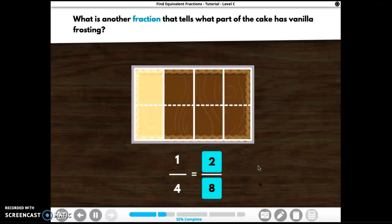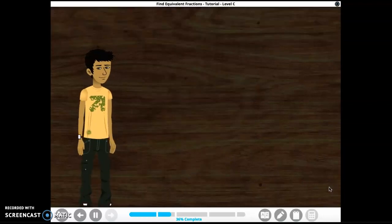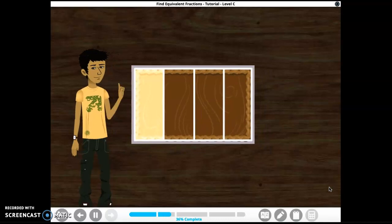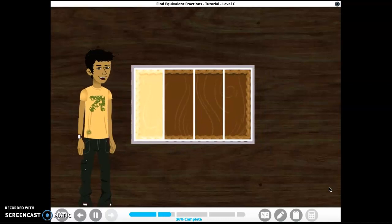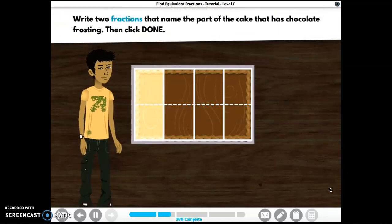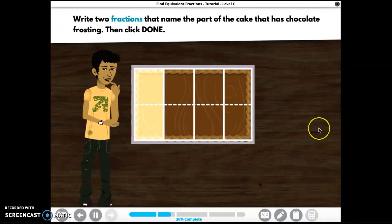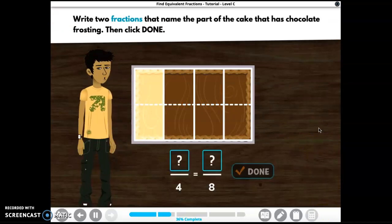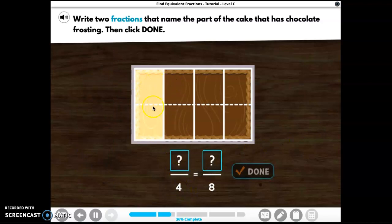Now let's look at the chocolate part of our killer chanilla cake. Remember we started out with four equal parts. Now we've cut the cake into eight equal parts. When you look at the cake, you can see fourths and eighths. Write two fractions that name the part of the cake that has chocolate frosting, then click done. Okay, so first we pretend this line is not here. Now it's four pieces. How many were chocolate?